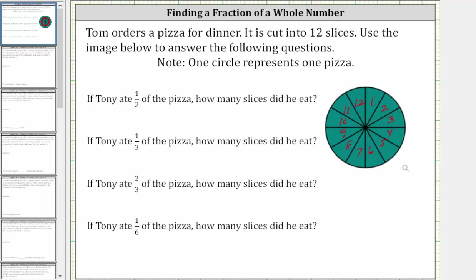For the first question, if Tony ate half of the pizza, how many slices did he eat? Well, if 12 slices makes up one whole pizza and Tony ate half of the pizza, half of the 12 slices would be six slices.